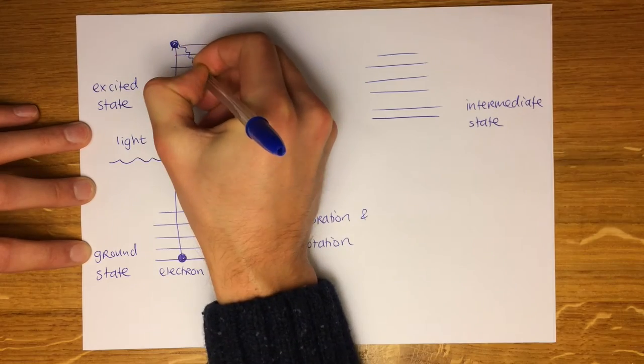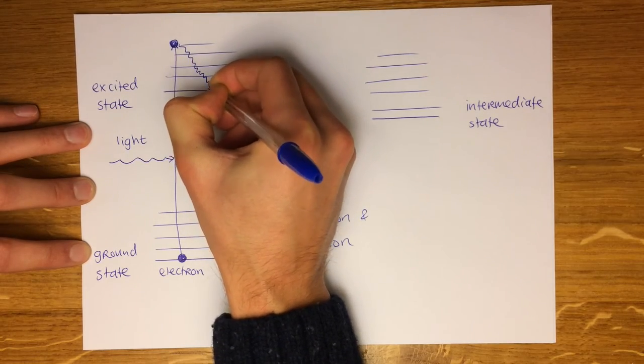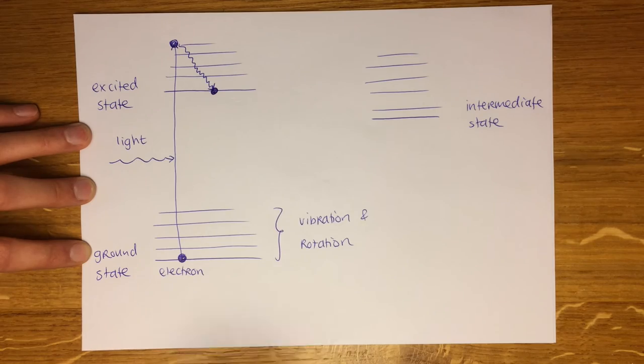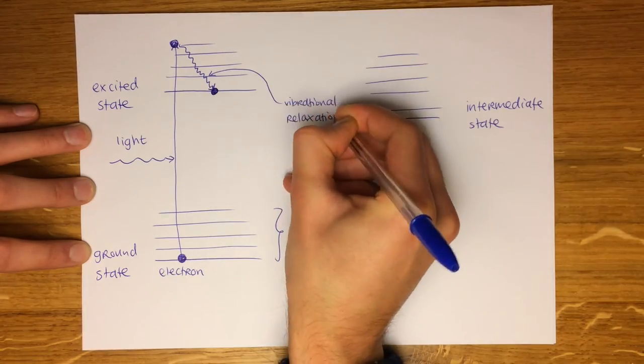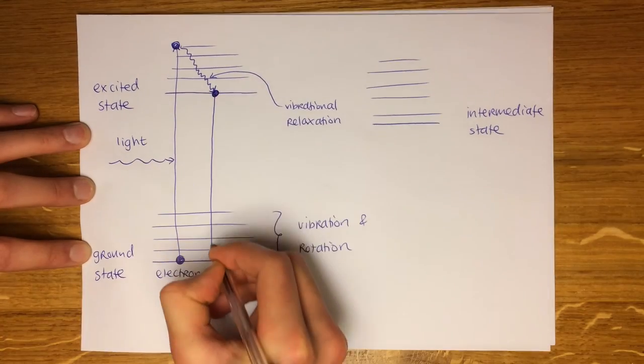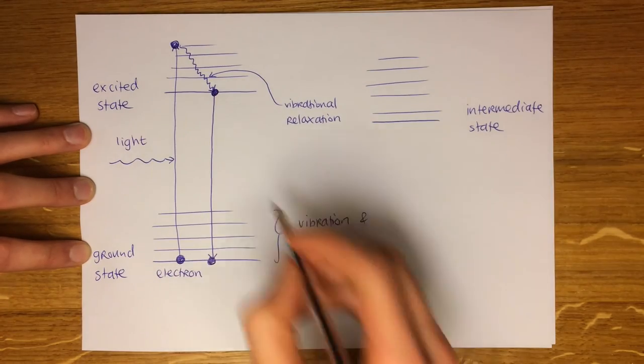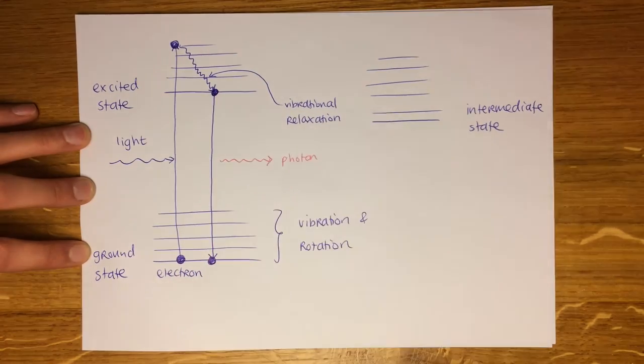One is straight down where it first loses some energy by converting it into vibration of the molecule. This is called vibrational relaxation. Then it can jump down to the ground level by which it releases a small amount of light called a photon.